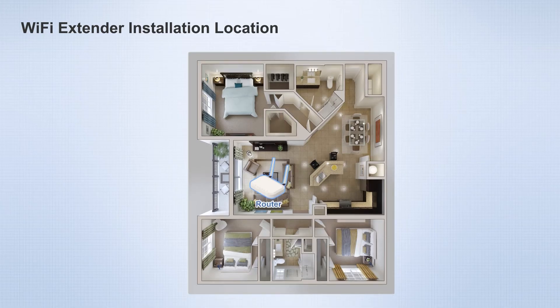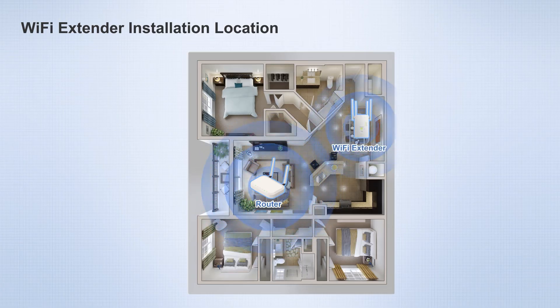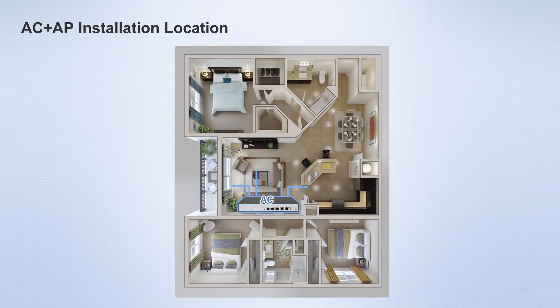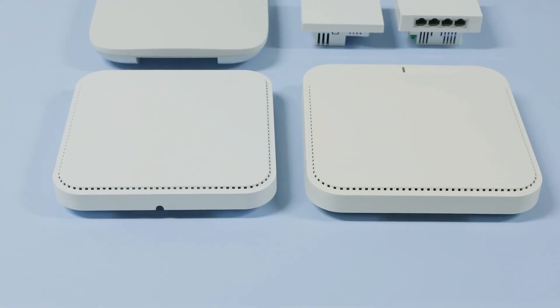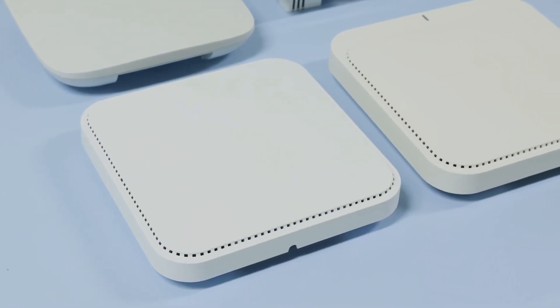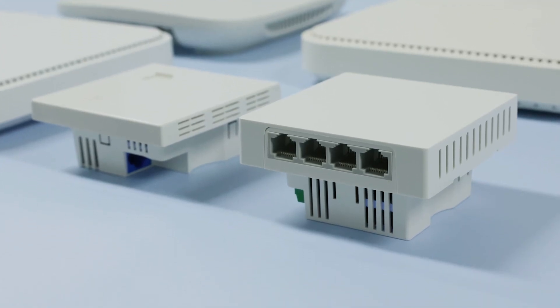Next, let's use a house floor plan to explain specific installation positions. If you choose Wi-Fi extenders, place the main router in the living room and the extender slightly further in the dining room, avoiding walls as much as possible to prevent network speed impact. If you want to set up AC and APs, place the AC in the weak current box, one AP in the living room, and one in each of the other bedrooms. Choose between in-wall or ceiling-mounted APs based on room requirements.